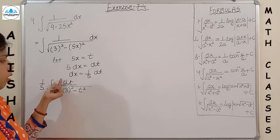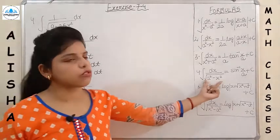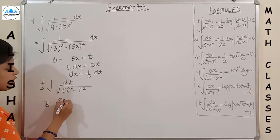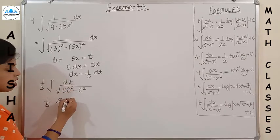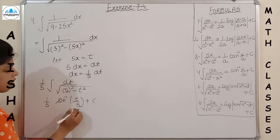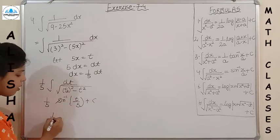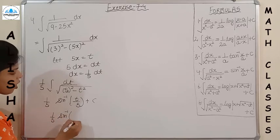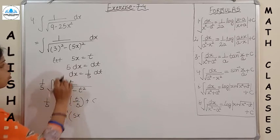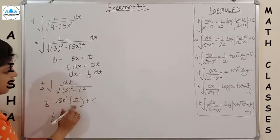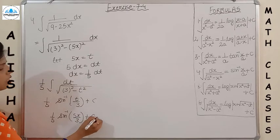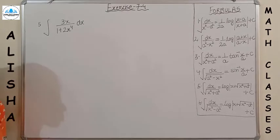This is the formula of type: 1/√(a² − x²), and the formula is sin⁻¹(x/a). Replacing x with t and a with 3, we get (1/5) sin⁻¹(t/3) + C. Putting back t = 5x, the final answer is (1/5) sin⁻¹(5x/3) + C. Please note down.